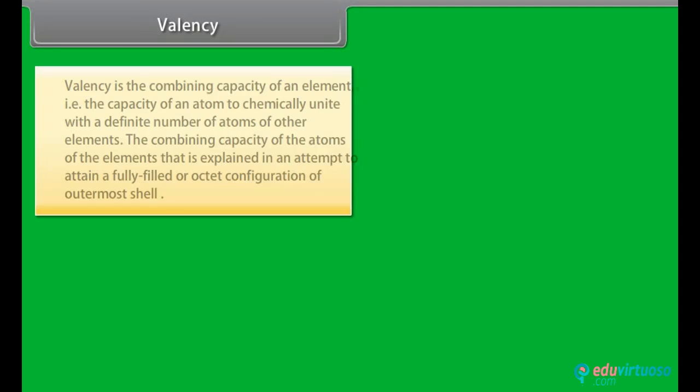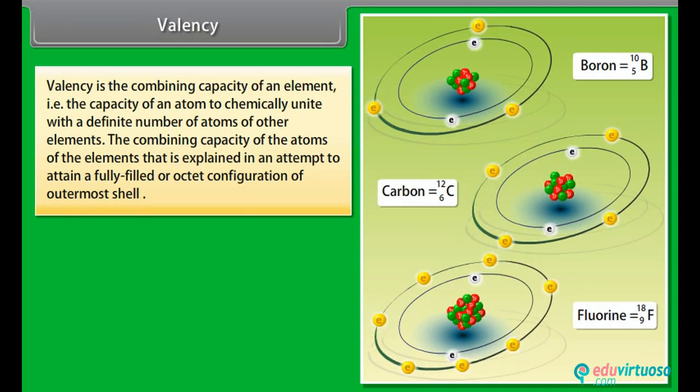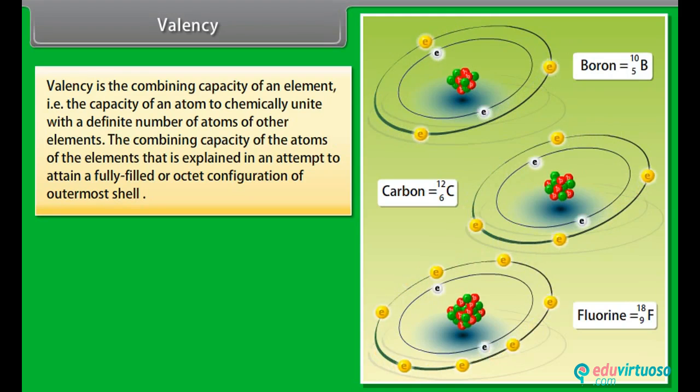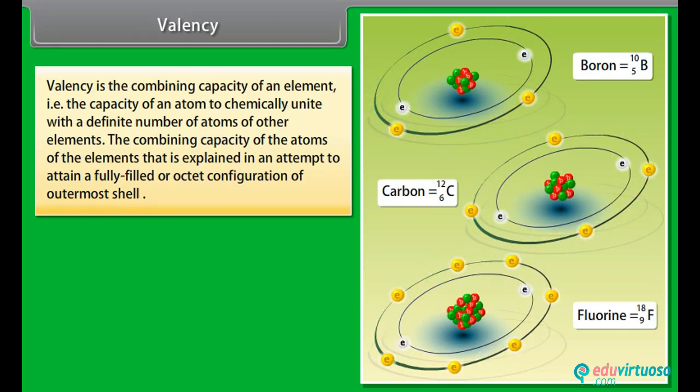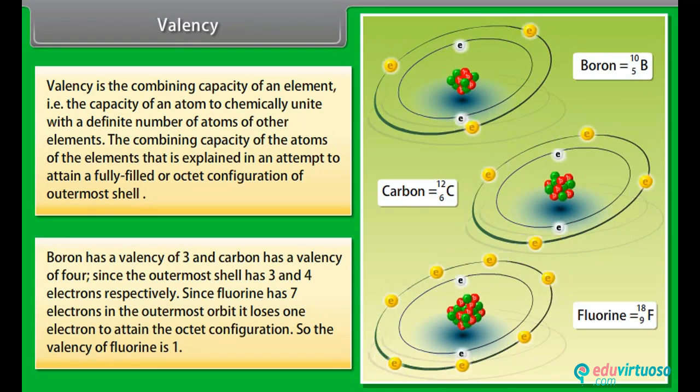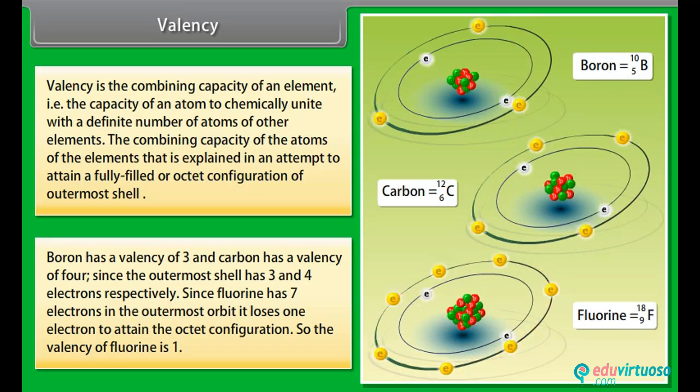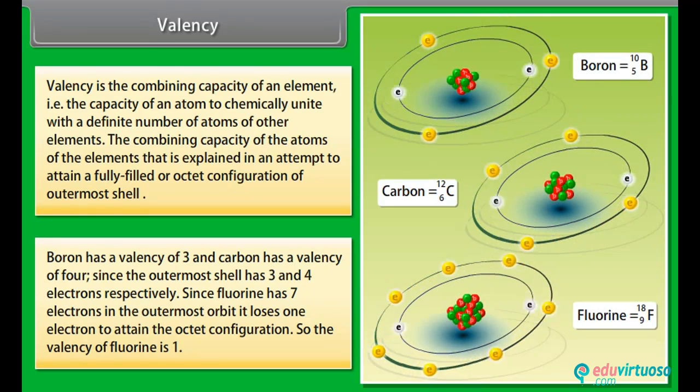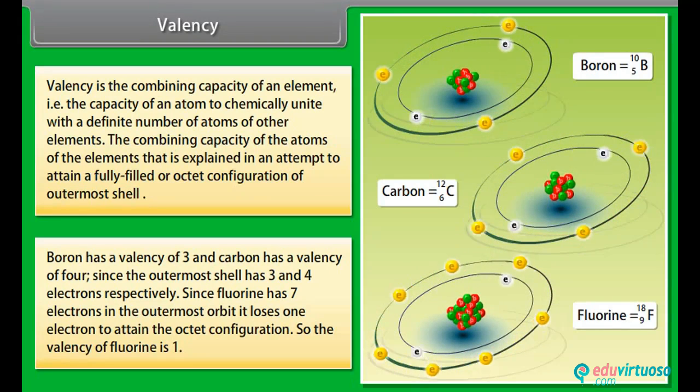Valency. Valency is the combining capacity of an element, that is, the capacity of an atom to chemically unite with the definite number of atoms of other elements. The combining capacity of the atoms of the elements is explained in an attempt to attain a fully filled or octet configuration of outermost shell. Boron has a valency of 3, and carbon has a valency of 4, since the outermost shell has 3 and 4 electrons respectively. Since fluorine has 7 electrons in the outermost orbit, it loses 1 electron to attain the octet configuration. So, the valency of fluorine is 1.